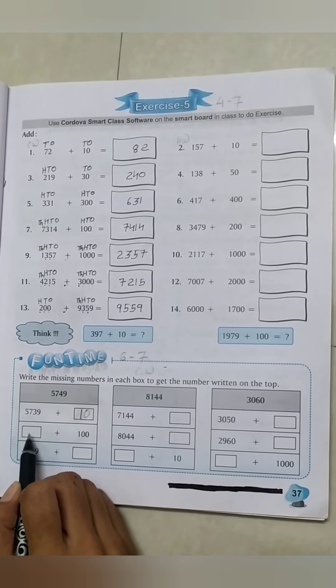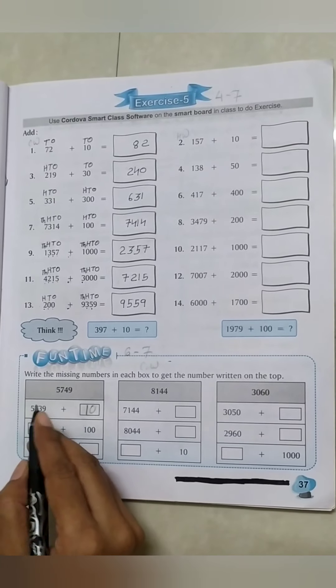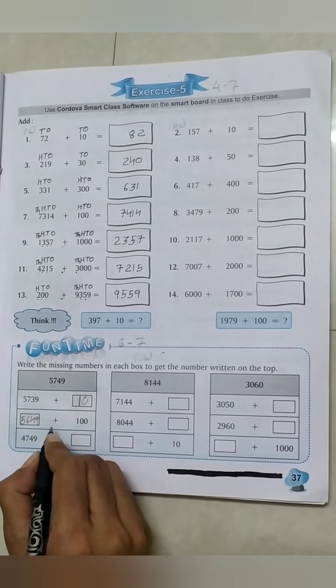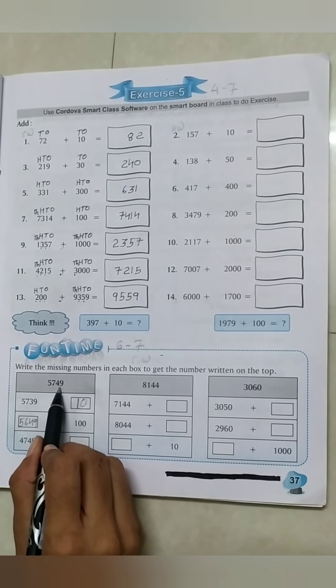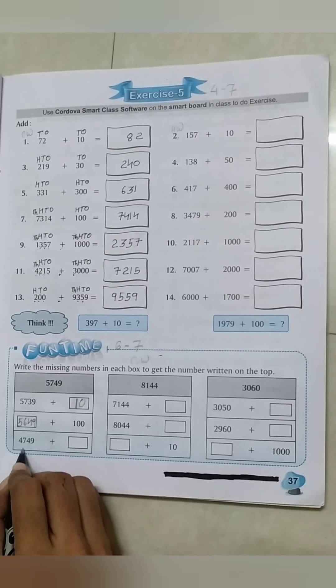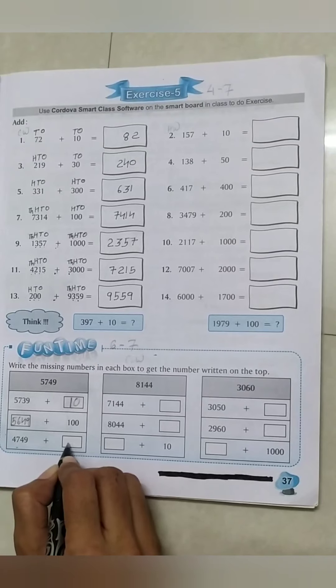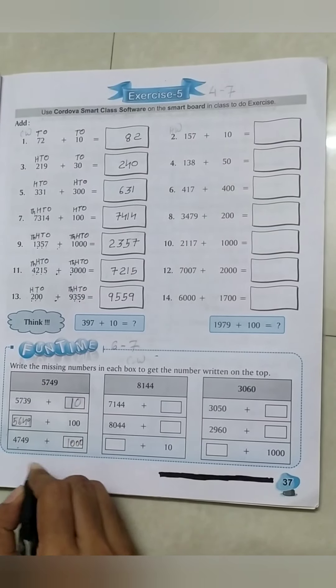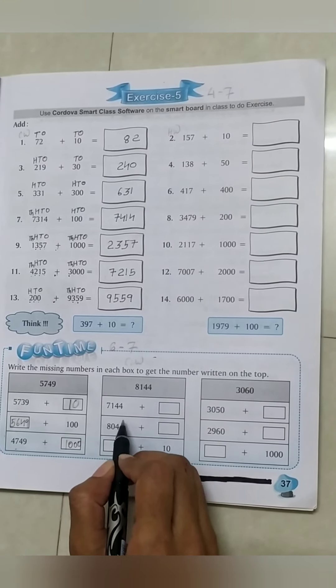Blank No. 2: blank plus 100. This is 5649 plus 100 to get the answer 5749. Blank No. 3: 4749 plus blank. We add 1000 to get the answer 5749.